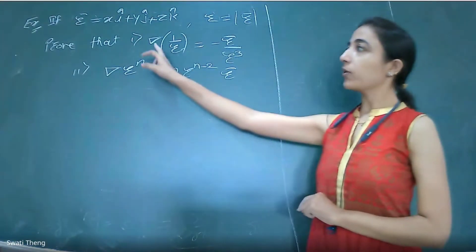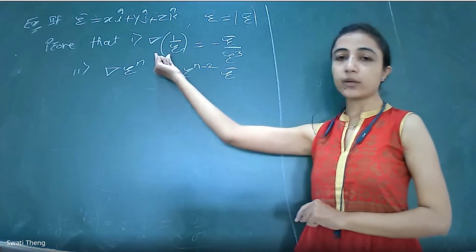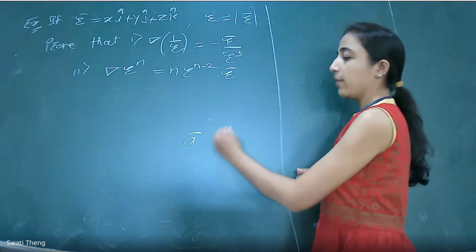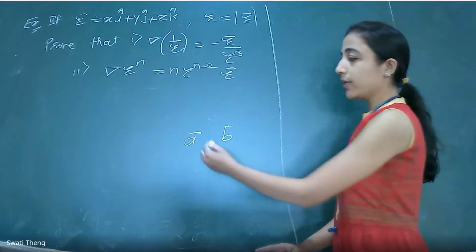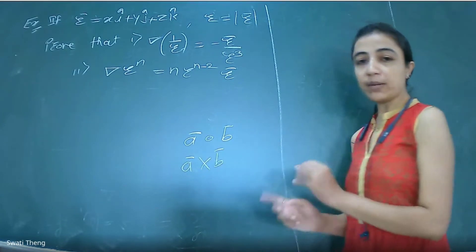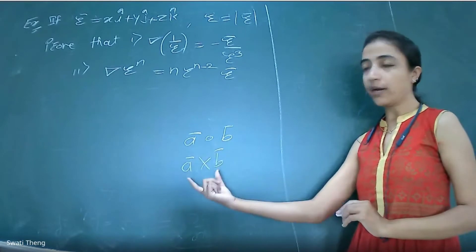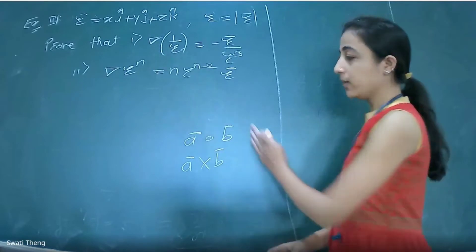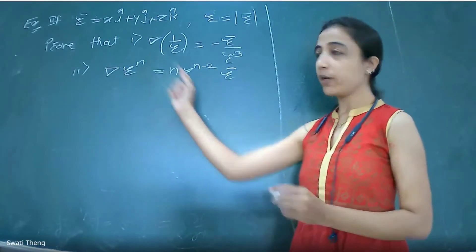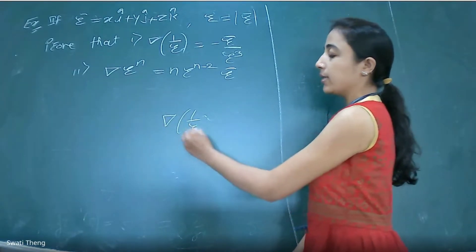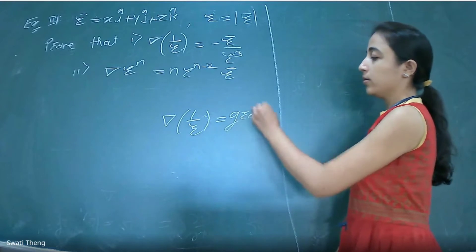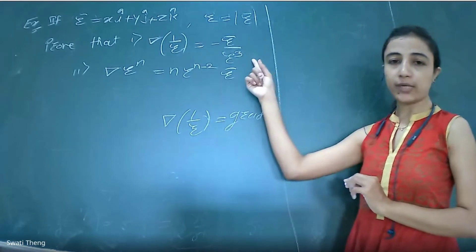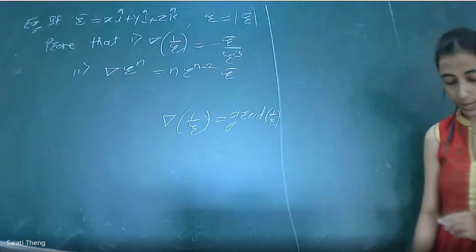Here we need to find ∇(1/r). When you have two vector quantities, the operator can give either dot product or cross product — simple multiplication is not used. When we write ∇(1/r), since 1/r is a scalar quantity and ∇ is the operator, this actually represents the gradient of (1/r). So we need to find gradient of (1/r) and show it equals the given expression.